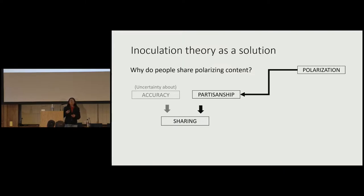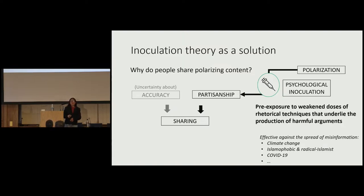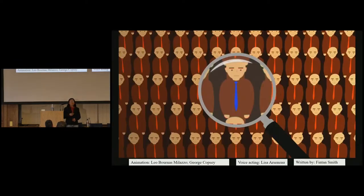We looked to the literature on psychological inoculation for our intervention. Psychological inoculation pre-exposes people to a weakened dose of the rhetorical techniques used in creating harmful content — warning people about the misleading strategies used. This has been shown effective in domains such as climate change, against radicalization, and COVID-19. We applied it to depolarization of online spaces. Our student Fintan created a 90-second video; I'll play you the 40-second section with the key components.